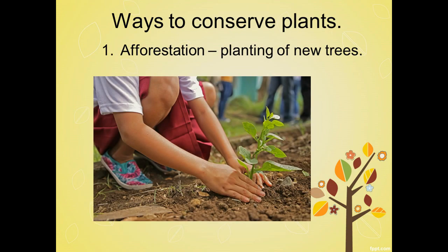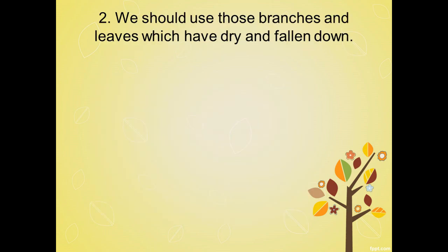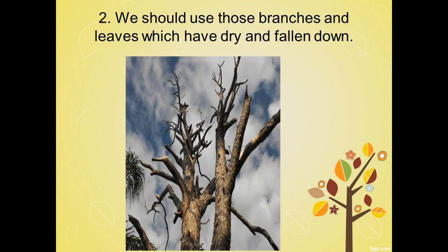So just think how important plants are for us. If we have to survive on this earth surface, we must protect plants and increase their number. This is called conservation of plants. The first process is afforestation — planting of new trees in the soil. In village areas, people require firewood for cooking; for that they should not cut trees, but instead use the dry branches and leaves which have already fallen down.